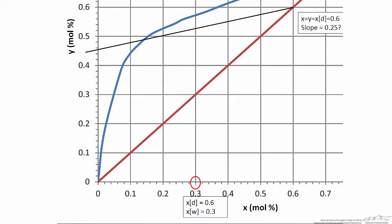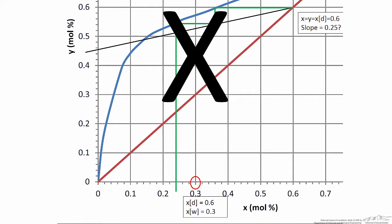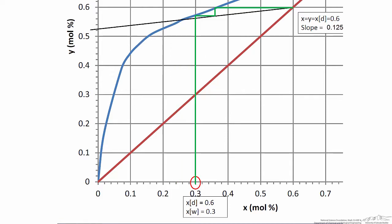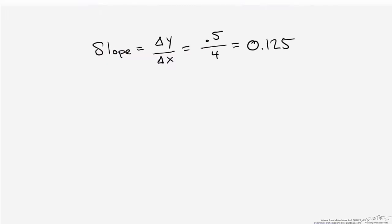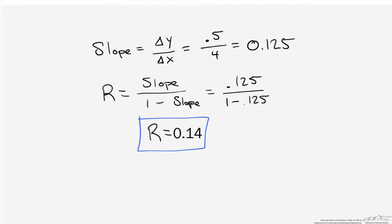Trying a new slope of 0.25 and stepping off the stages, we're still not quite there but heading in the right direction. Repeating this process several more times, we arrive at a slope of approximately 0.125, which gives us exactly two stages and the required bottoms composition of 0.3. Based on that slope of 0.125, we calculate a reflux ratio of 0.14 — the reflux ratio needed at the start of the distillation to deliver the distillate composition of 0.6.